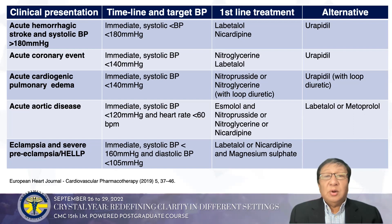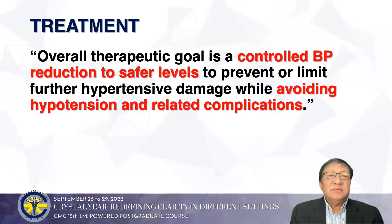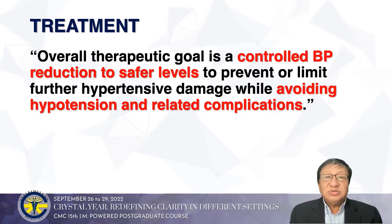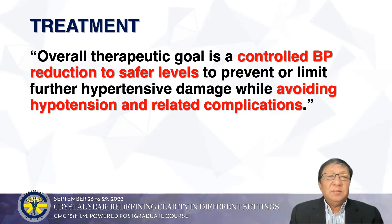First-line treatments: for pulmonary edema, nitroglycerin with a loop diuretic; for acute aortic disease, esmolol, nitroprusside, nitroglycerin, or nicardipine. The overall therapeutic goal is to control BP reduction to safer levels — different levels depending on which hypertensive emergency is present — to prevent or limit further hypertensive damage while avoiding hypotension and related complications. Close monitoring is essential when administering IV medications.